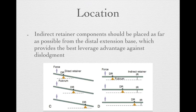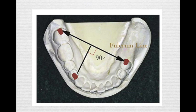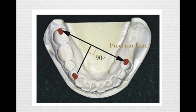Considering the principle of leverage: the more distance between the fulcrum and the indirect retainer, the more force provided to the tooth. To determine the location of the indirect retainer, first find the fulcrum line — located on the two most posterior rest seats on your framework. Connect those two posterior rests with an imaginary line, then draw another imaginary line perpendicular to the fulcrum line. Find the most anterior tooth in that direction — that would be your indirect retainer location.